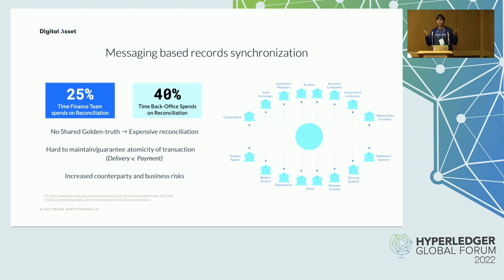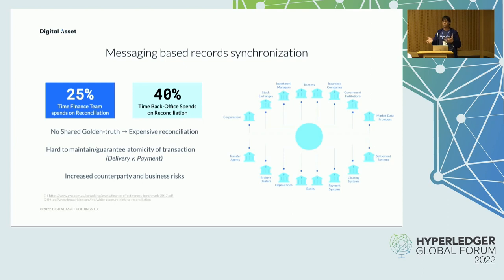Today, applications that facilitate workflows spanning multiple organizations are typically built on some sort of messaging infrastructure. Each party maintains its own records of transactions and state, and these records are synchronized using some kind of messaging scheme. Since this approach is inherently not failsafe, it results in disputes between parties and necessitates expensive reconciliation of mismatched records.